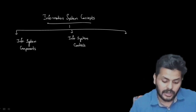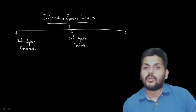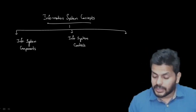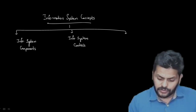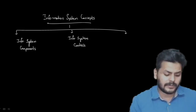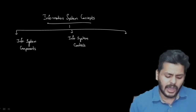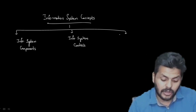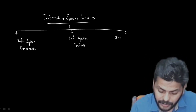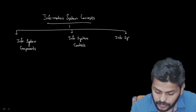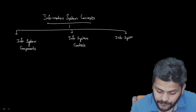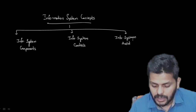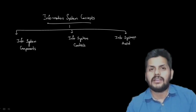Whether the controls are working as per design, whether the controls designed are right, and in a present situation where many things are completely IT-oriented — what sort of tools can be used for audit — that brings us to information systems audit. These are the three parts to the chapter.